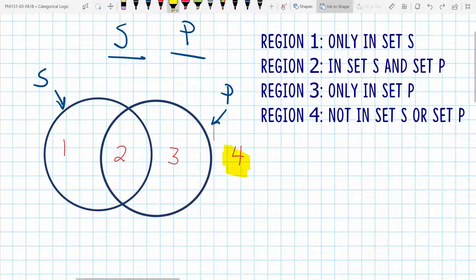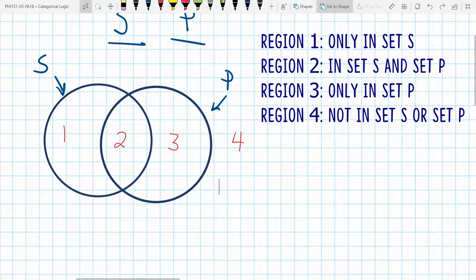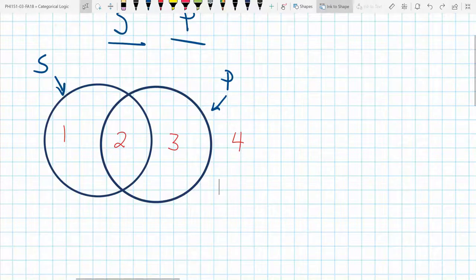And so finally, there are things that exist in region 4, which is anything that is not in S or P. So now that we know the regions of a Venn diagram, let's talk about how we mark them up, how we notate them.